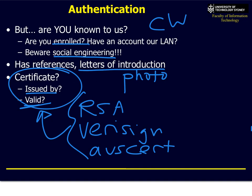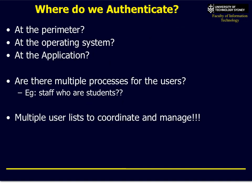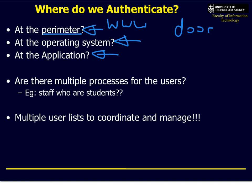Authentication is important, but verifying who you actually are is another story altogether. So the question becomes: where do we authenticate? The perimeter could be the website, or it could be something physical like a door. It could be the operating system login prompt, or the application itself — or all three. It's up to you to work it out.